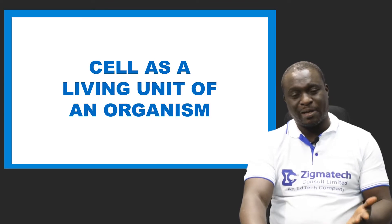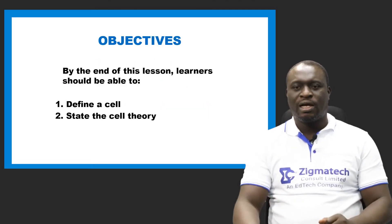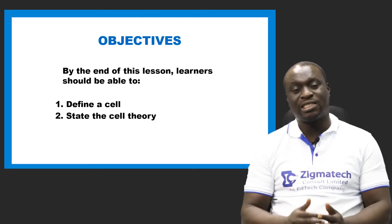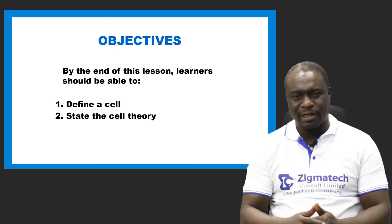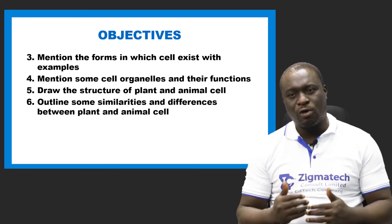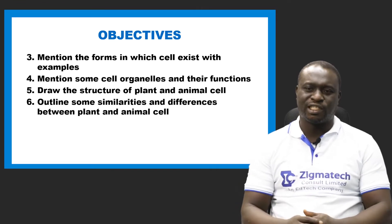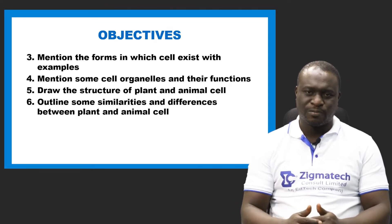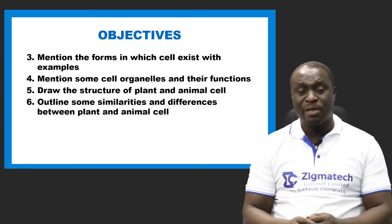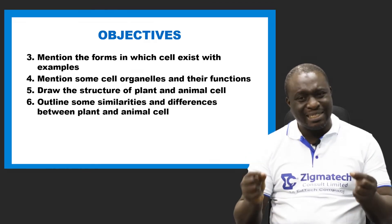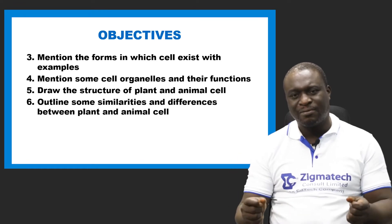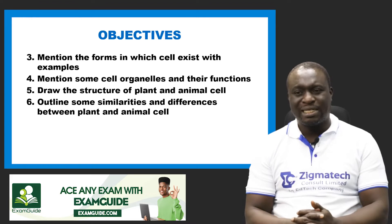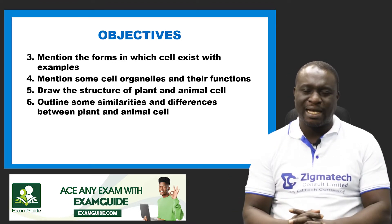There are several objectives you are expected to achieve. By the end of this lesson, you should be able to define a cell, state the cell theory, mention the forms in which cells exist and give examples, mention cell organelles and their functions, draw and identify parts of plant and animal cell structures, and outline similarities and differences between plant and animal cells.